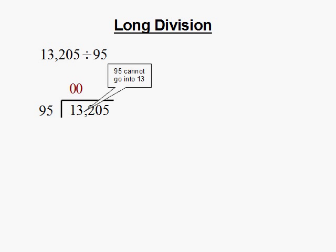We then divide 95 into 13. And since 95 cannot go into 13, we're going to put a 0 on top of the 3 of 13.